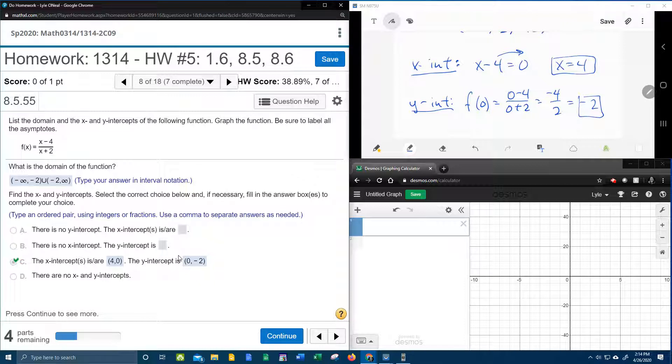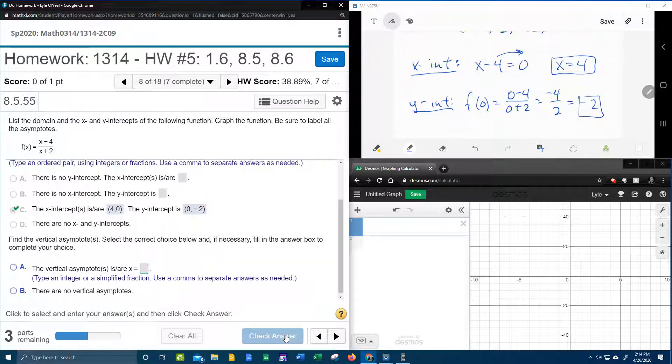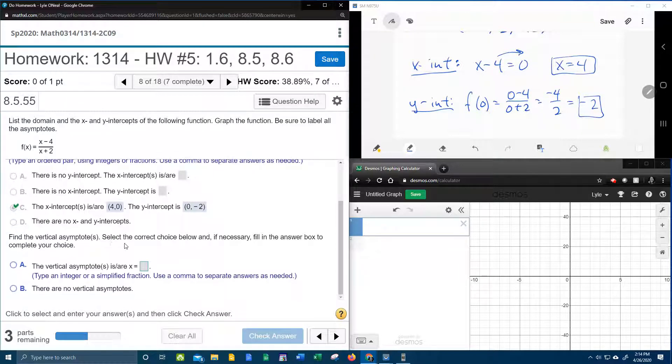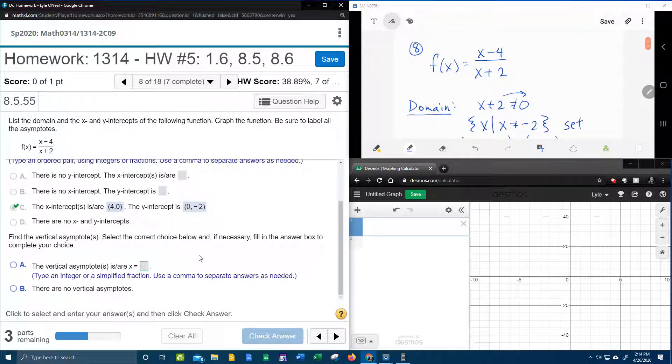Alright. Next, what does it want? Press continue. Find the vertical asymptote. Alright, so is there a vertical asymptote? Well, I believe so.